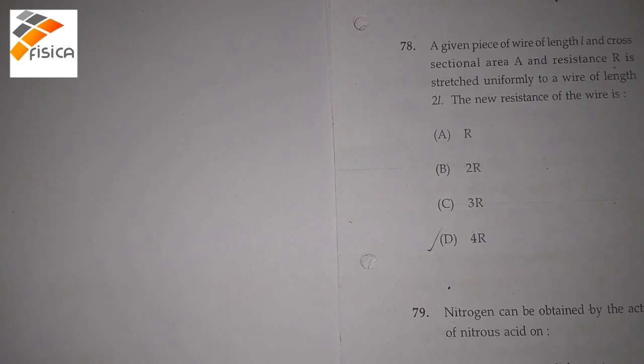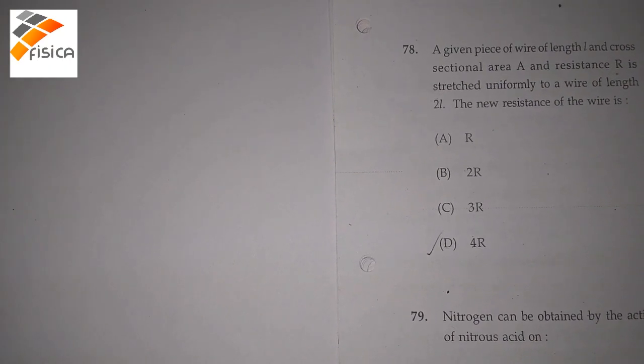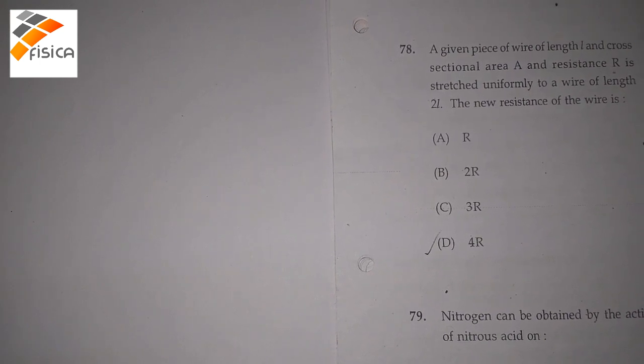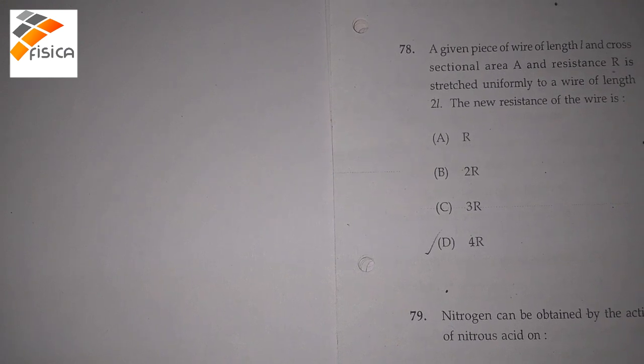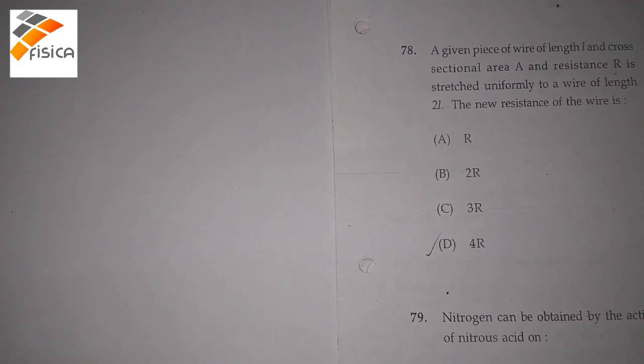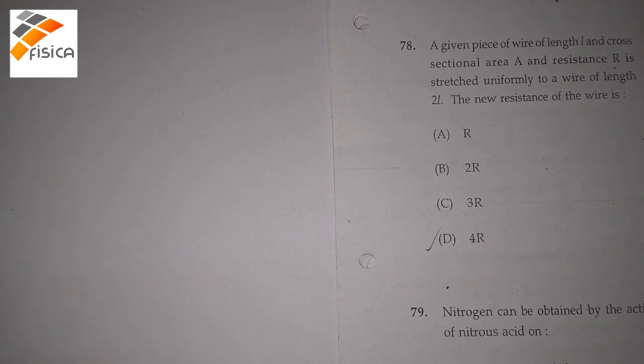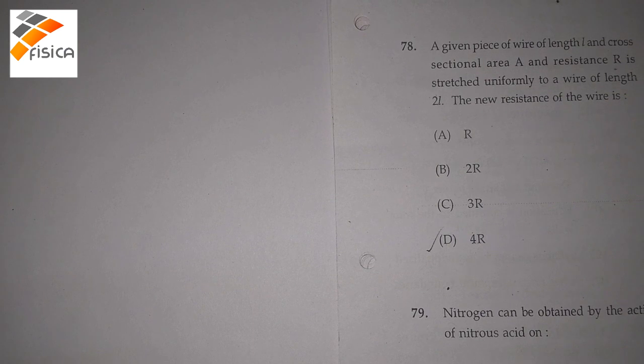12th, 13 September, category 3, physics in the A. The question is that a given piece of wire of length L and cross-sectional area A and resistance R is stretched uniformly to a wire of length 2L. The new resistance of the wire is.